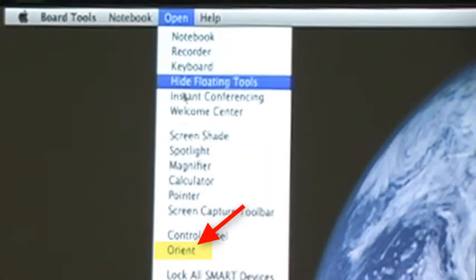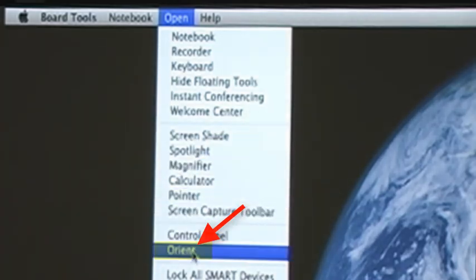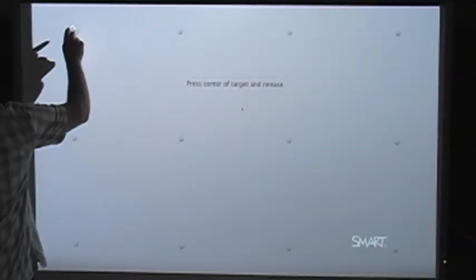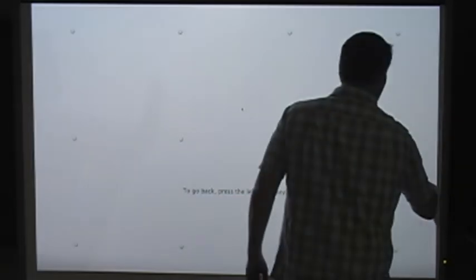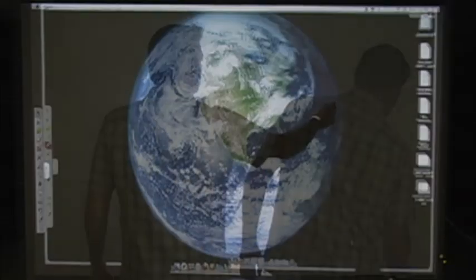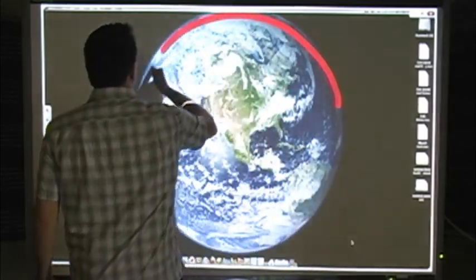With board tools on, go to Open Orient. Tap the screen once on each dot as it is targeted. Orient will exit automatically when you click the last dot. Now, the stylus should write where you expect it to.